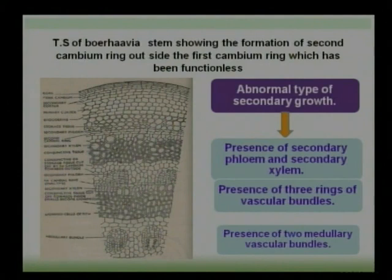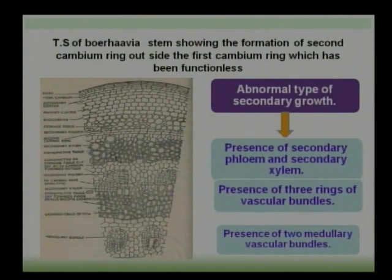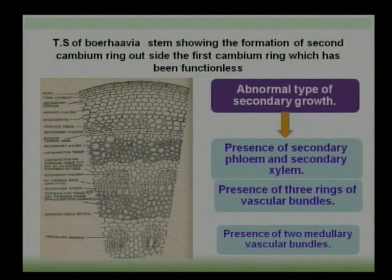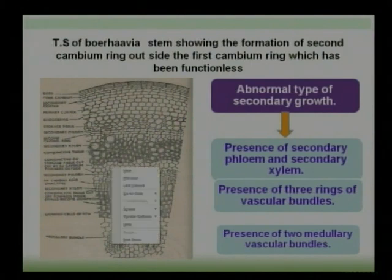This process ultimately results in the thickening of the stem — that is the main character of the anomalous secondary growth in Borhevia diffusa. The conjunctive tissue is present between the two vascular bundles. Parenchyma cells become meristematic and produce vessels and fibres; vessels towards the intrafascicular region and fibres towards the interfascicular cambium. The interfascicular cambium fibres convert into very hard sclerenchyma tissue with thick lignified cell walls, providing mechanical support to the plant body.